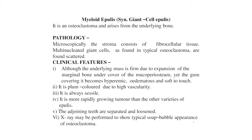Myeloid epilis, or giant cell epilis, is an osteoclastoma arising from the underlying bone. Microscopically, the stroma consists of fibrocellular tissue with multi-nucleated giant cells, as found in typical osteoclastoma, scattered throughout.